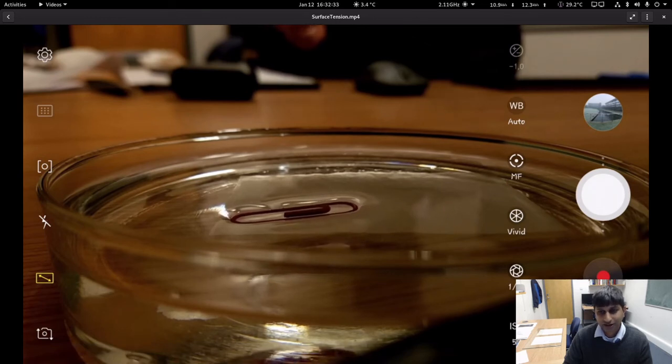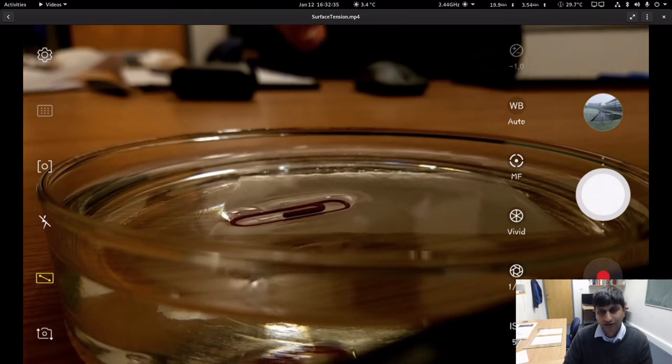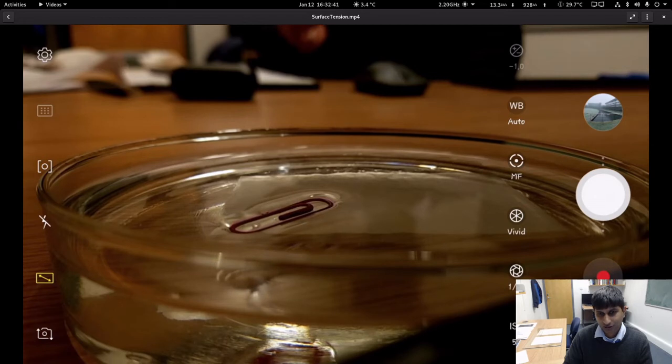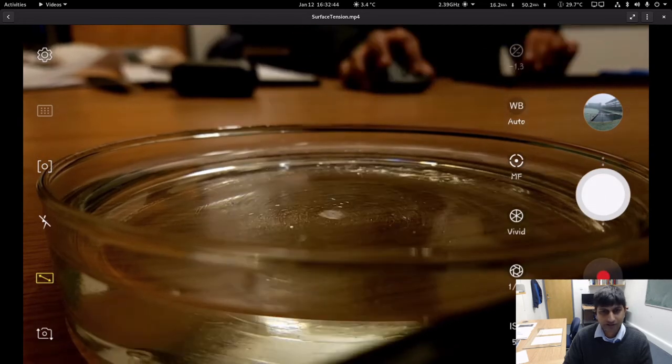So this extra force of surface tension causes the paper clip to float on the surface of water even though it is made of a material which is heavier than water.